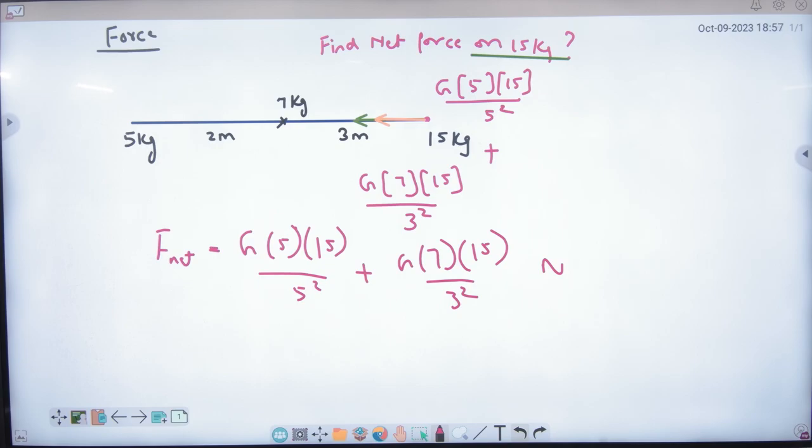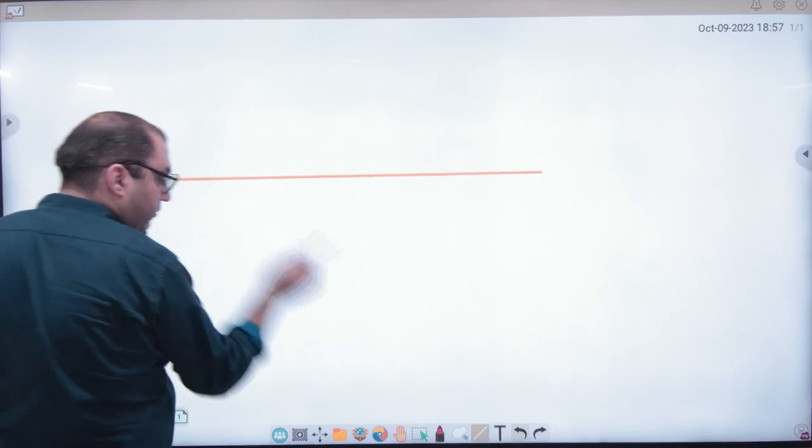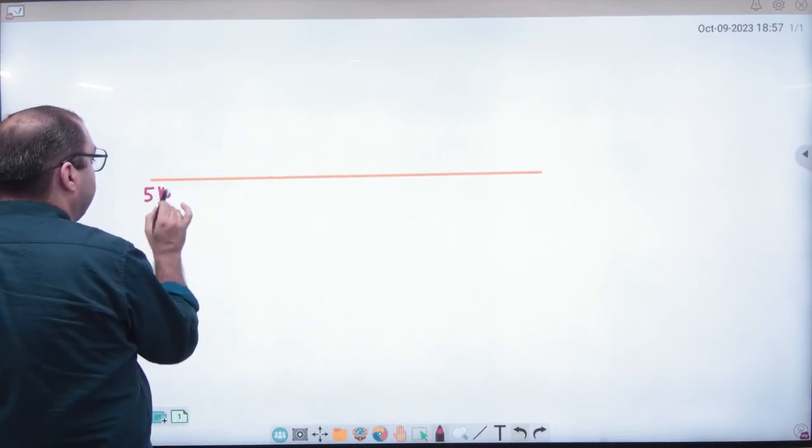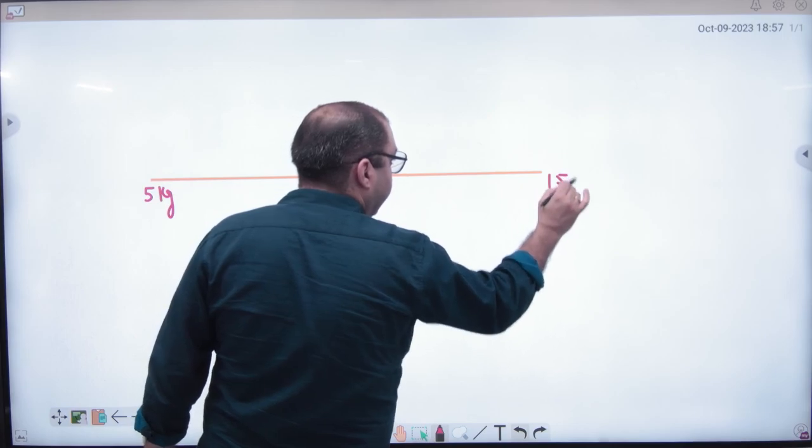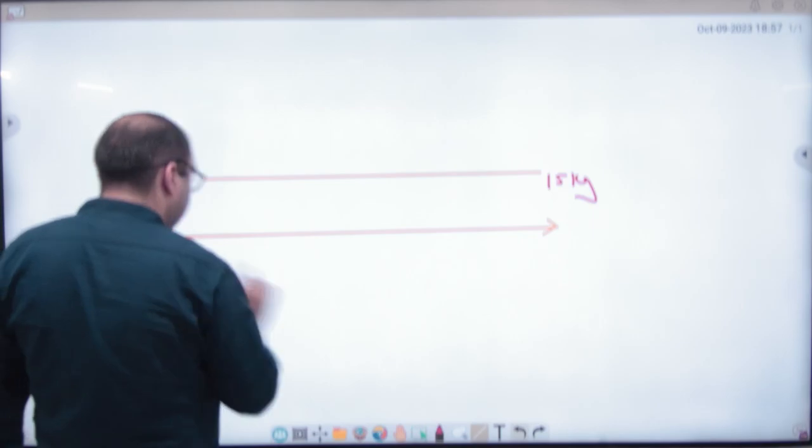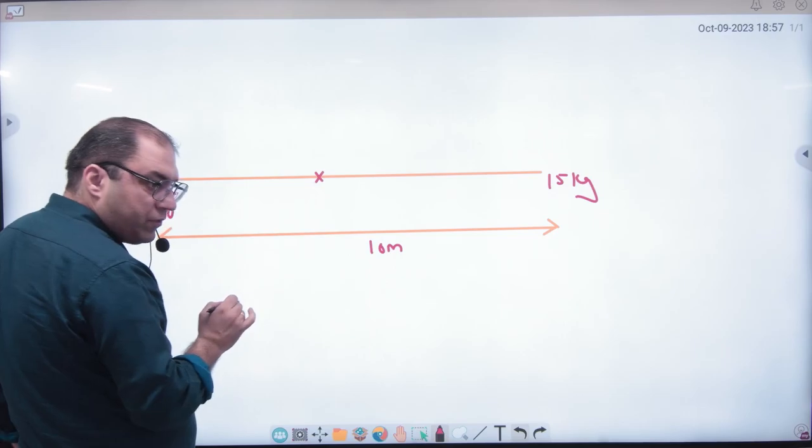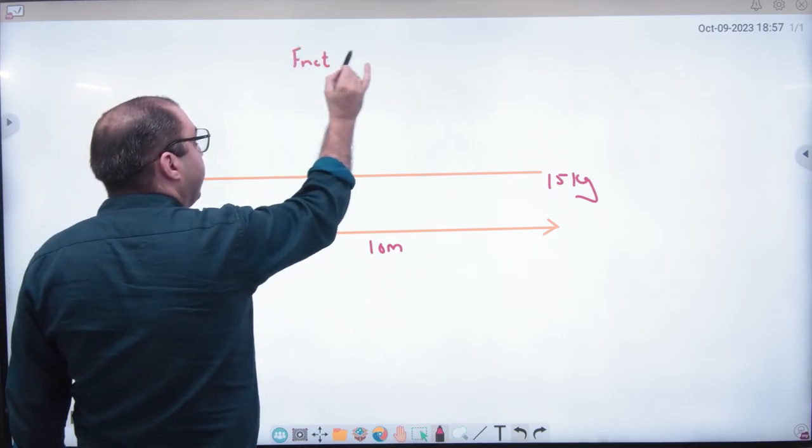Understood? This is the first type of numerical which we did last time also. Just revising. In this, the question on force can also come like this. Suppose you have again, assume this is 5 kg mass, assume this is 15 kg mass, and you are given total distance between them, assume 10 meter distance. Tell me one such point where net force becomes what? Zero.